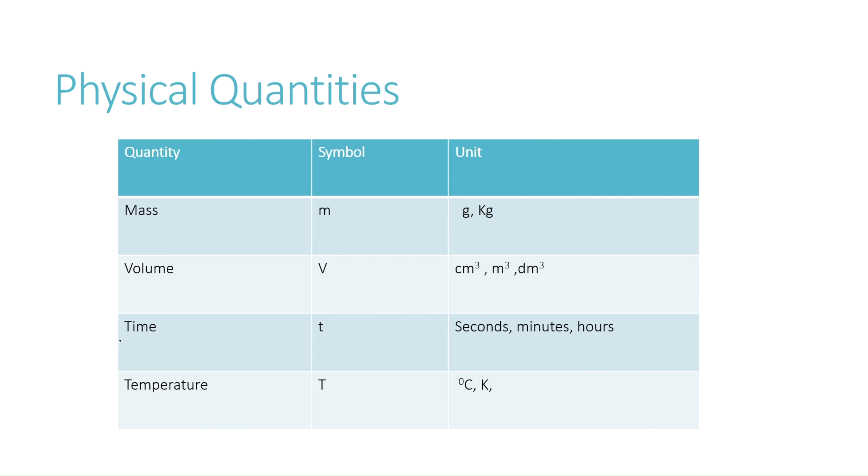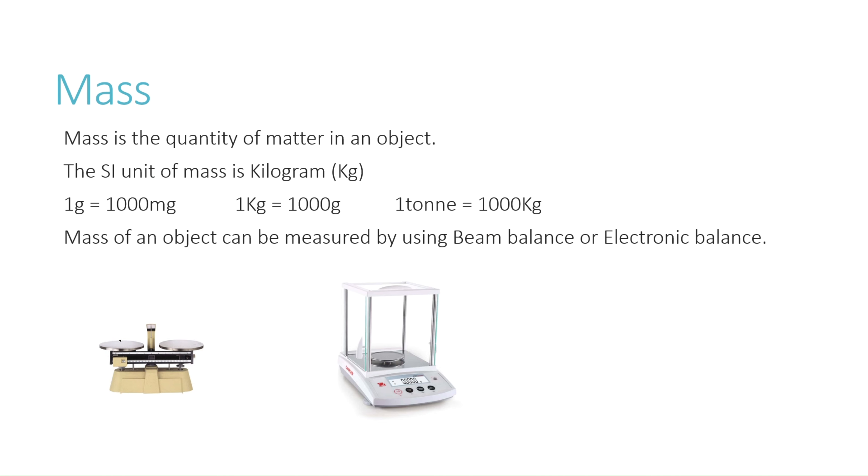As we perform experiments in science, we measure different physical quantities and each physical quantity has its particular unit. Each quantity is expressed with its units. Today we'll study about four physical quantities: mass, volume, time, and temperature, and each physical quantity is expressed by its unit. The first one is mass. Mass is the quantity of matter in an object. The SI unit of mass is kilogram.